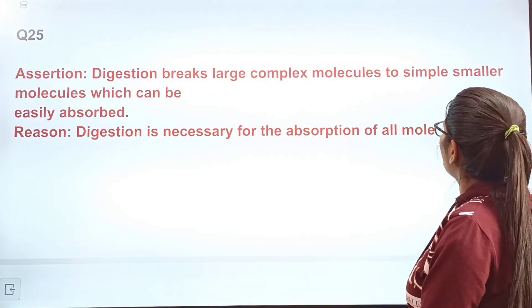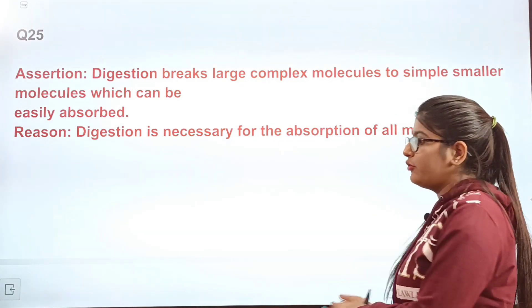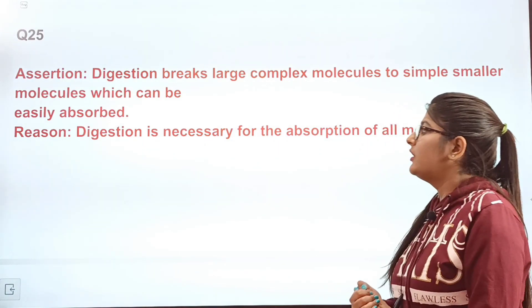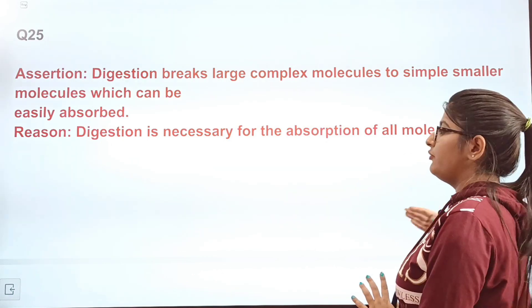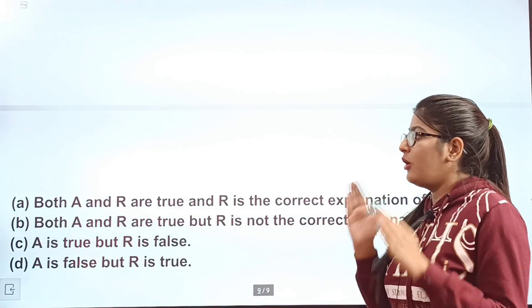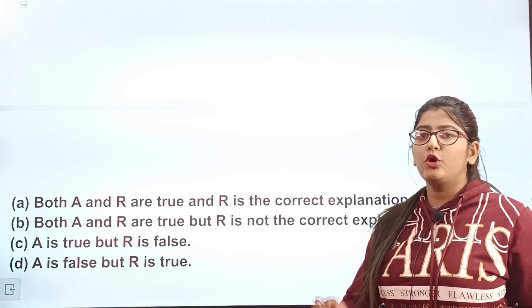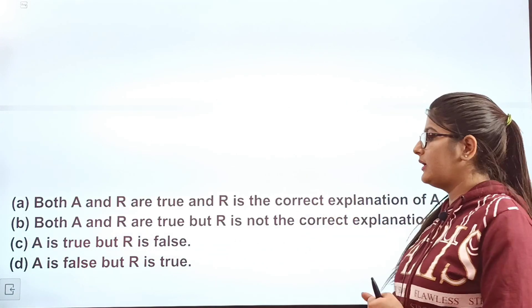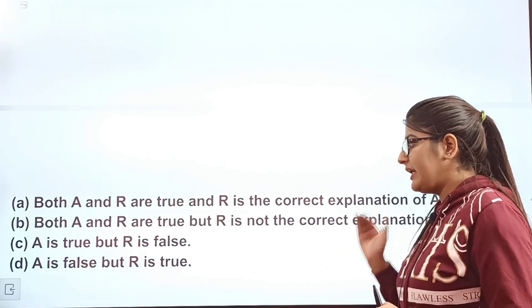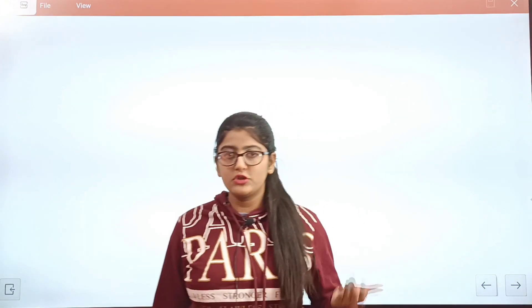Question 25: Assertion — digestion breaks large complex molecules to simpler smaller molecules which can be easily absorbed. Reason — digestion is necessary for the absorption of all molecules. Options: A — both A and R are true and R is the correct explanation of A; B — both true but R is not the correct explanation of A; C — A is true but R is false; D — A is false but R is true. With this, 25 questions on the Life Processes chapter are complete — our quick revision is done.